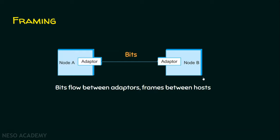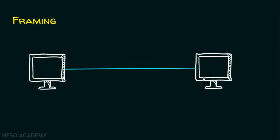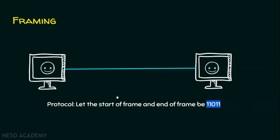Let's see an animation. Suppose there are two computers — let's say these are happy computers because they are ready for data exchange. When a sequence of bits is sent by the sender computer, how does the receiver understand frame 1, frame 2, frame 3, etc.? Before they start communication, they mutually agree upon a protocol, because a protocol defines the rules and regulations that govern data communication. Here the protocol defines a rule: let the start of the frame and the end of the frame be 11011.